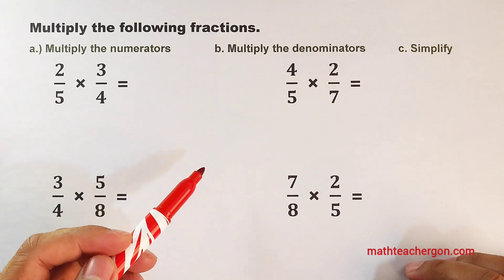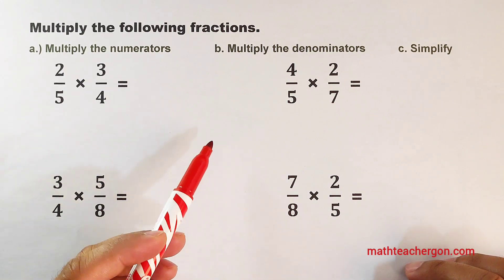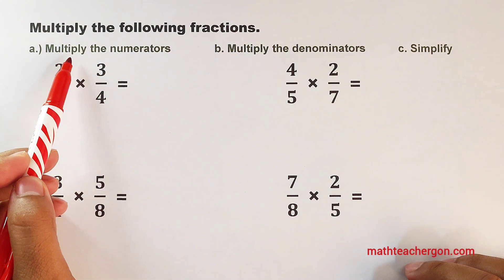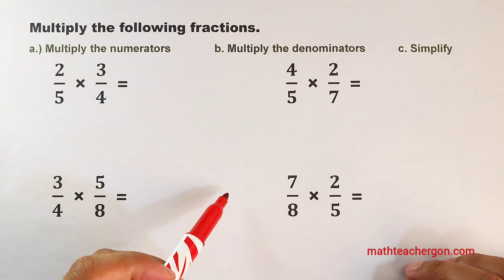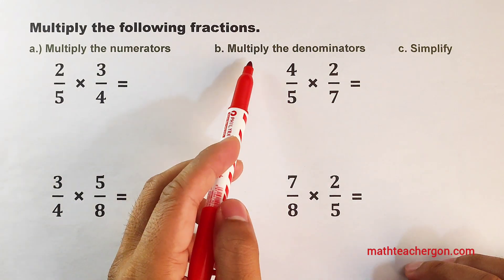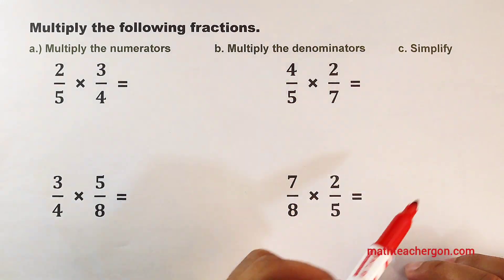Now to multiply fractions, we need to follow three simple steps. First, multiply the numerators. Second, multiply the denominators. And simplify.